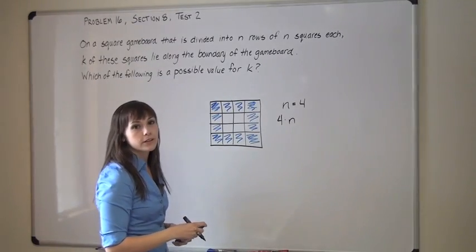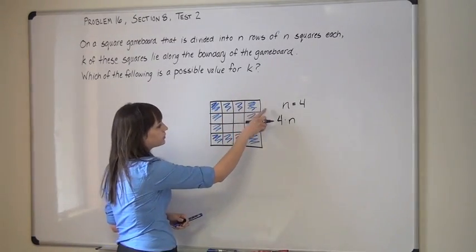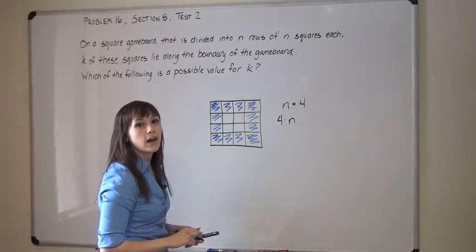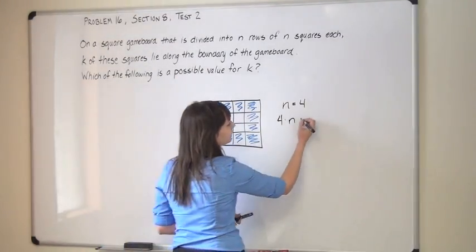But you've probably noticed that I double counted all of the squares on the corners. Because they get counted for both sides that they're touching. So I'll have to subtract out the four corners that I over-counted.